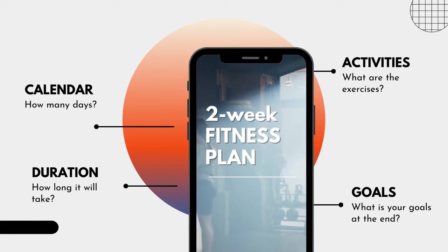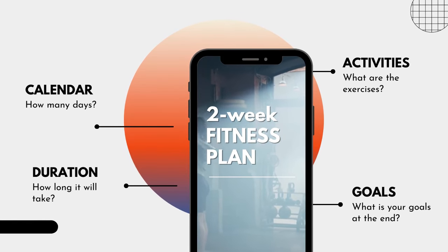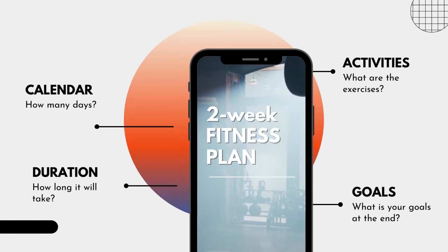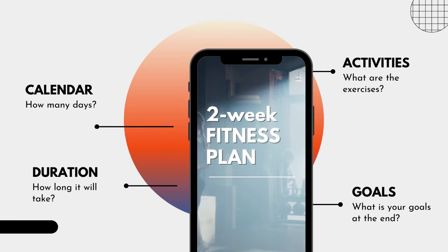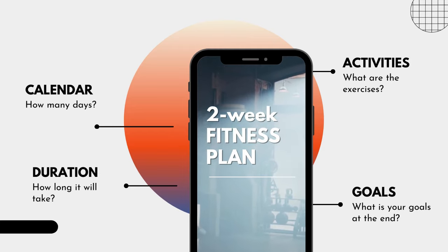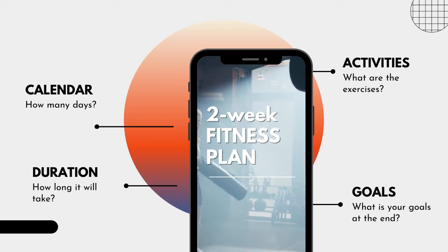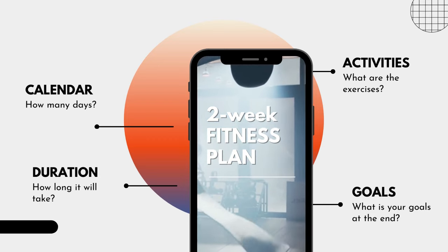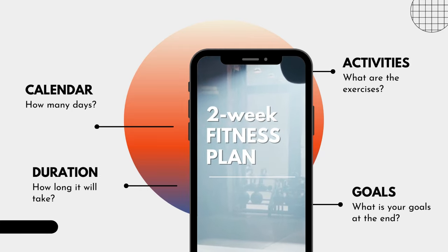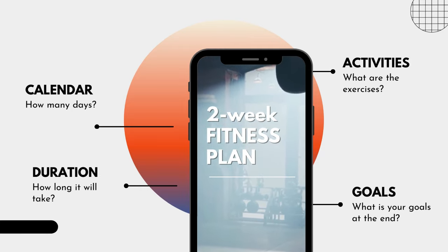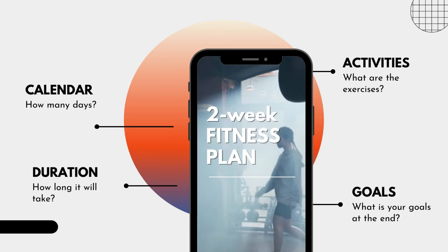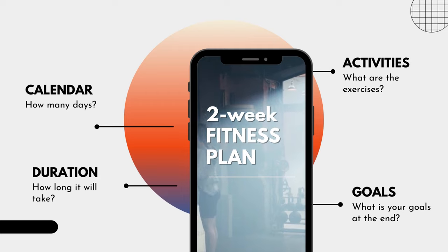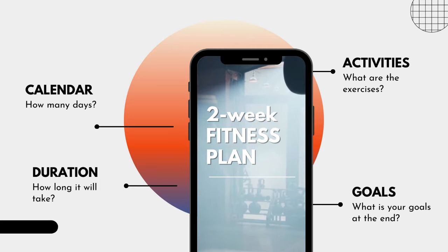Now, you're going to have the two-week fitness plan. So what does it mean? First, you have to set your calendar — how many days you need to spend for that. It is two weeks, so you have 14 days. We also have the duration — how long it will take. It talks about the repetitions, the set of exercises, and the activities you have to decide on for your fitness plan, or what activities to include each day. We also have the goals — in each day, you have to set your goals and allocate your exercise based on what you want to achieve.